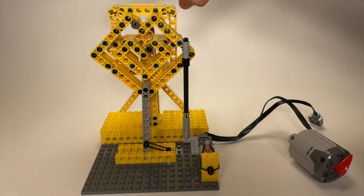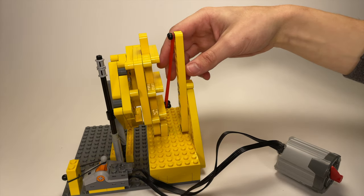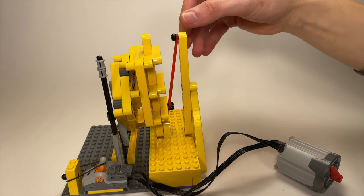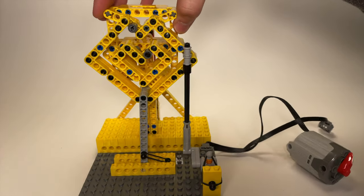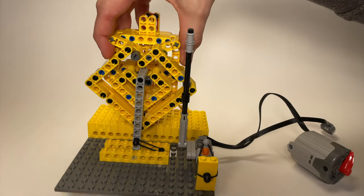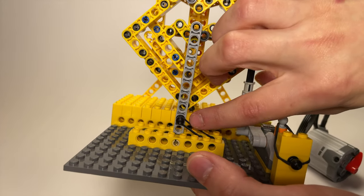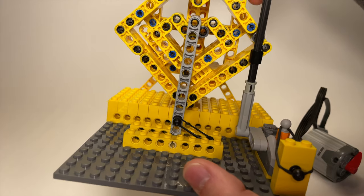The working principle behind this thing is actually pretty simple. First of all, there are two rubber bands in the back that are always pulling the frame upwards. There's a second rubber band that's always pulling the gray locking beam to the right.